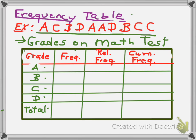Next, we're going to fill in our frequency column. So we're going to count up the number of A's that occurred. So we have 1, 2, 3 A's. So we're going to put a 3 there. We have 1, 2 B's. So we're going to put a 2 there. We have 1, 2, 3 C's. So we're going to put a 3 there. We have 1, 2 D's. So we're going to put a 2 there. And then in our total column, we're going to add up 3 plus 2 plus 3 plus 2, and we get 10. So 10 verifies that we included every single data point.